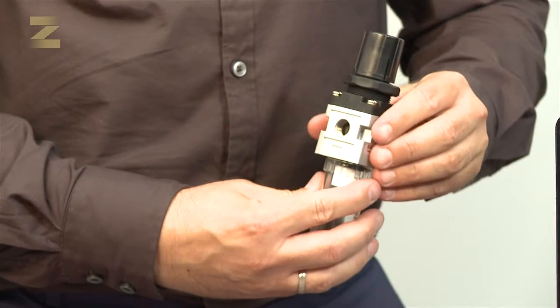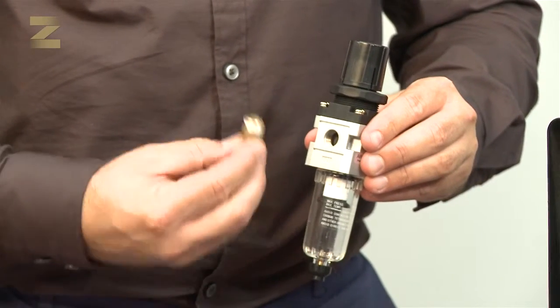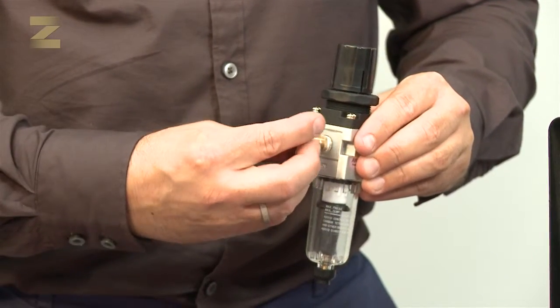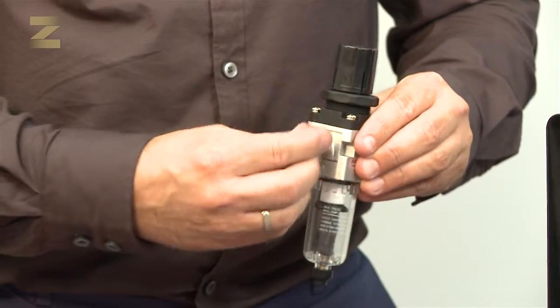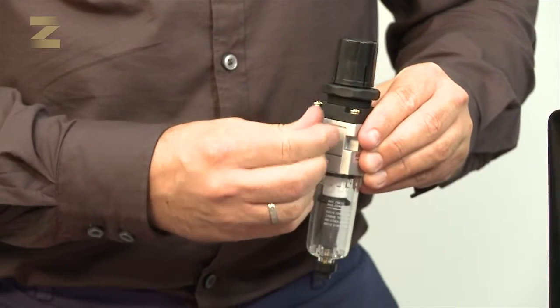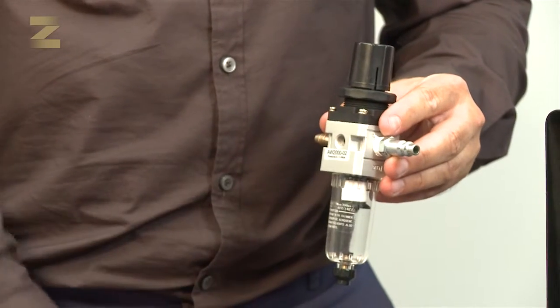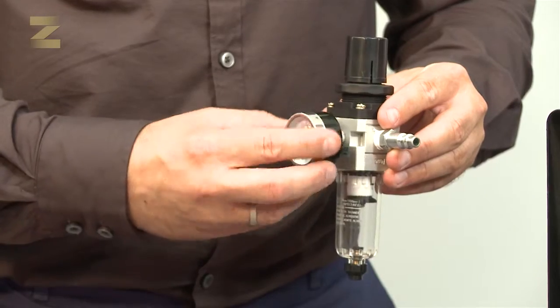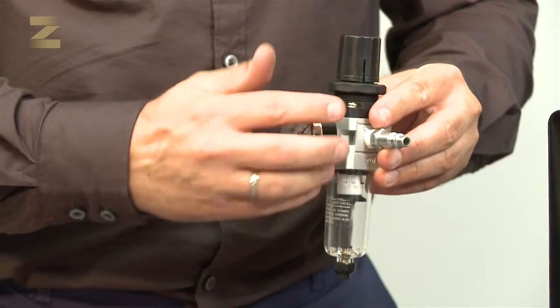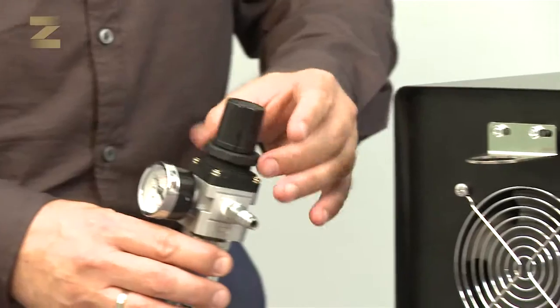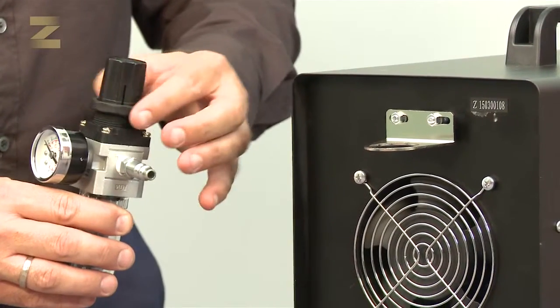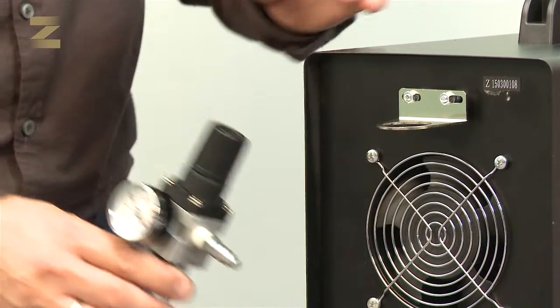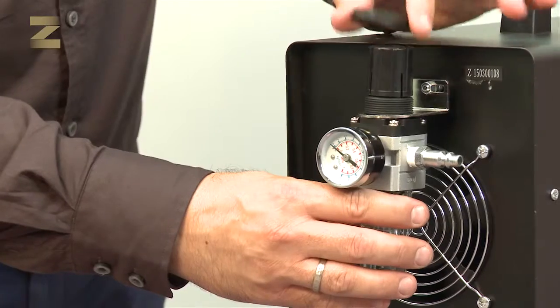On the left side of the regulator, which is labeled IN, attach a quick connector. The connector will be used for a hose from the compressor. Now take the pressure gauge, wrap its thread with Teflon and screw it to the front opening on the regulator. Now insert the regulator from the bottom of the plate and tighten the fastener.